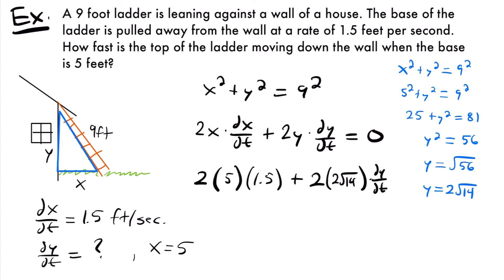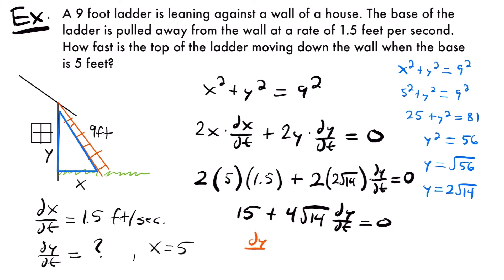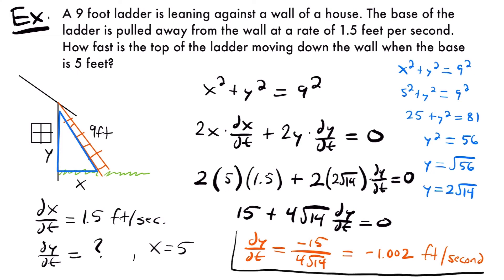Subtracting 15 from both sides and dividing by 4 square roots of 14, we find dy/dt equals negative 15 divided by 4 square roots of 14, which in decimal form is approximately negative 1.002 feet per second. The negative sign makes sense because the top of the ladder is sliding down.